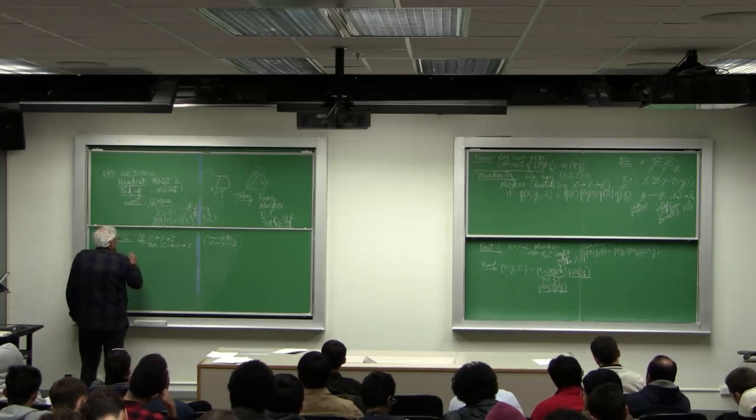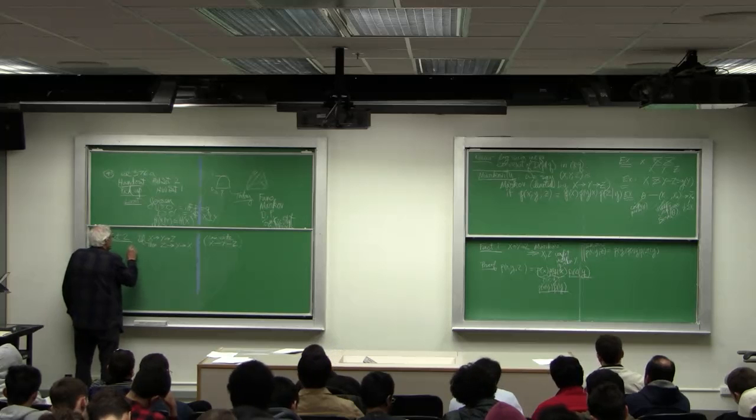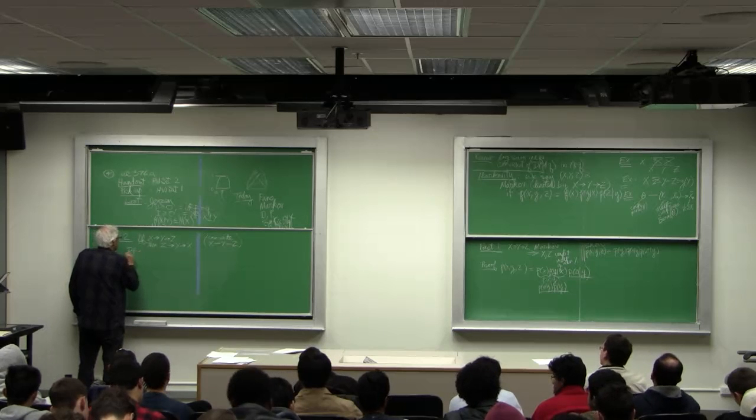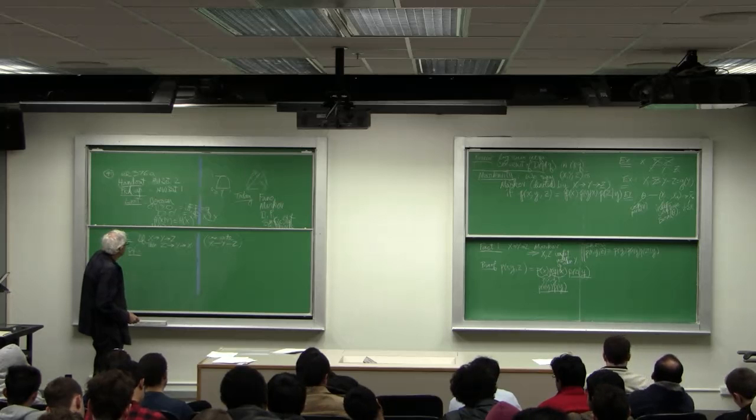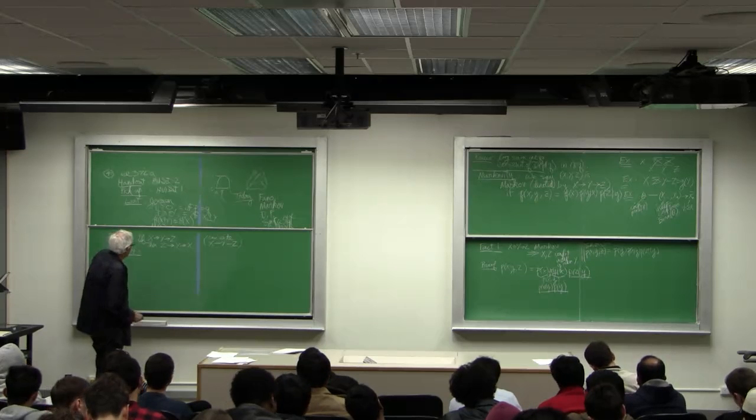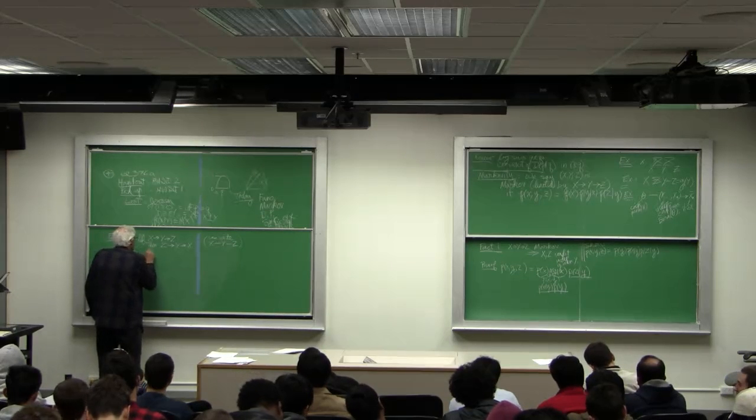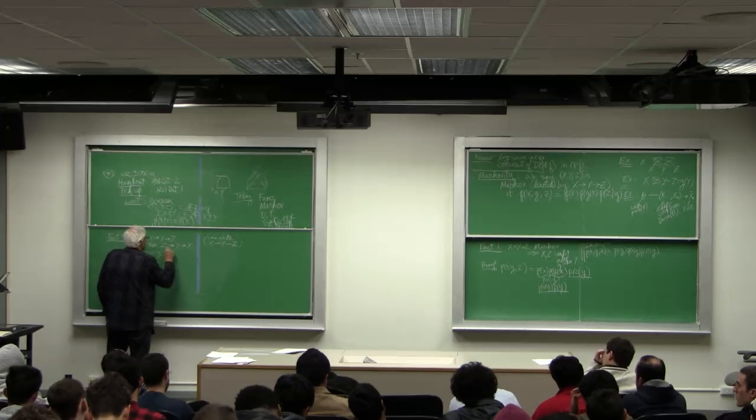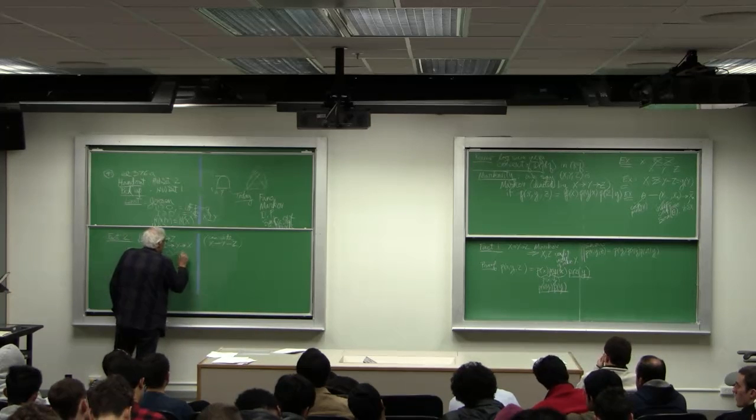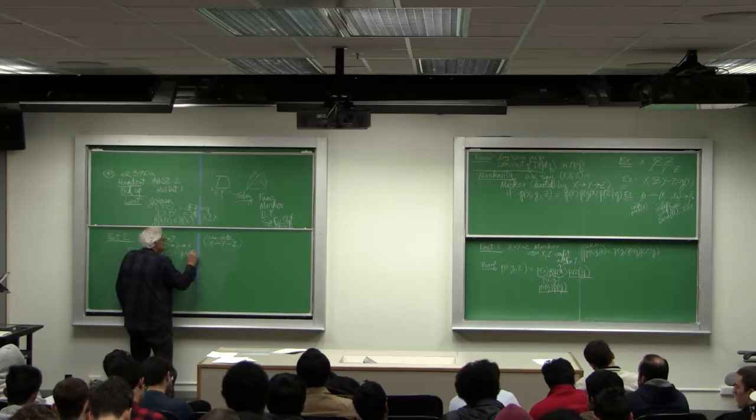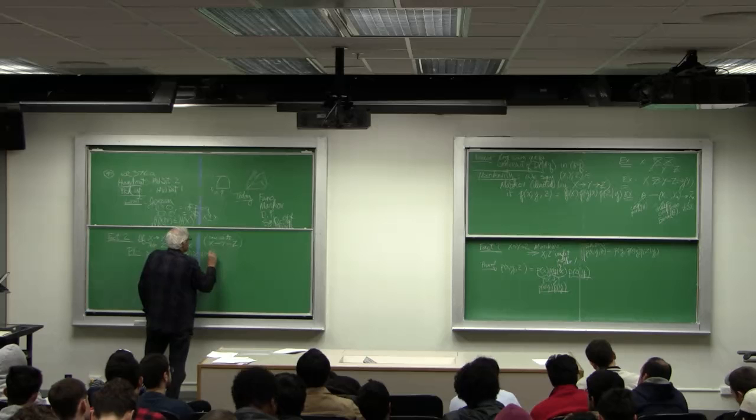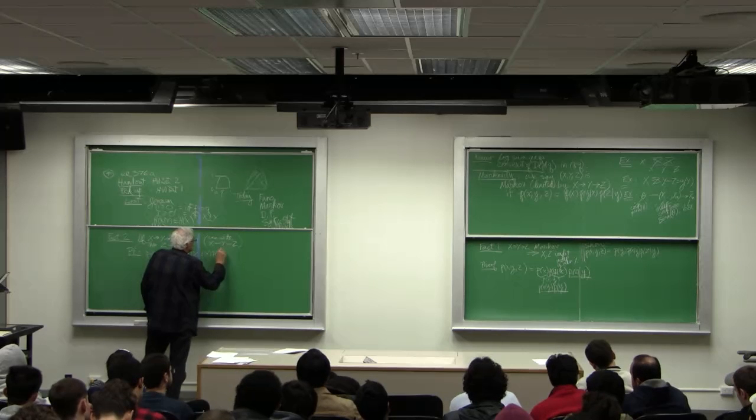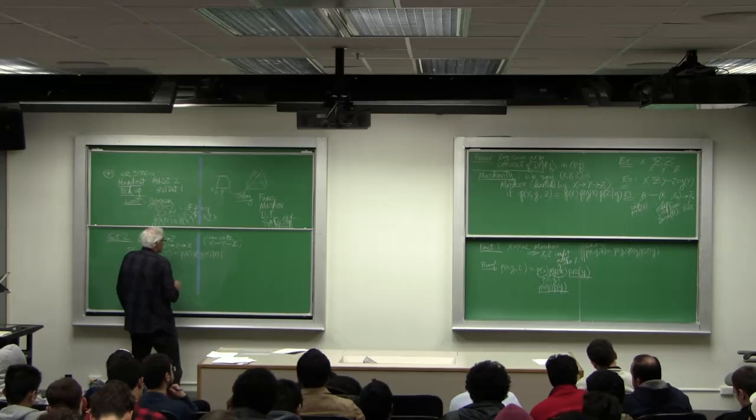Let's prove that. P of X, Y, Z. The basic definition is P of X times P of Y given X times P of Z given Y.